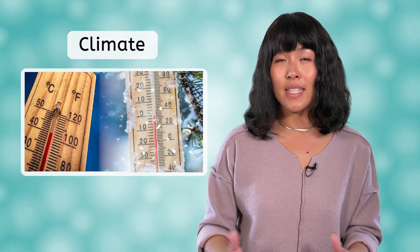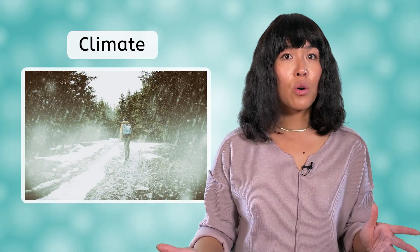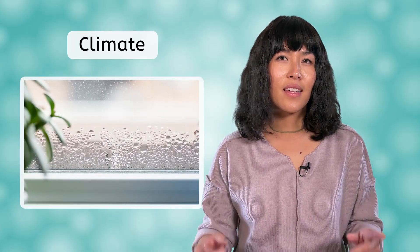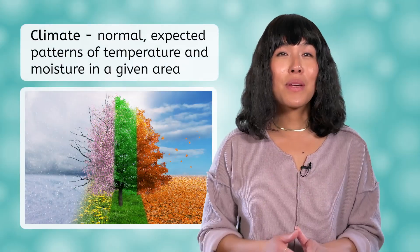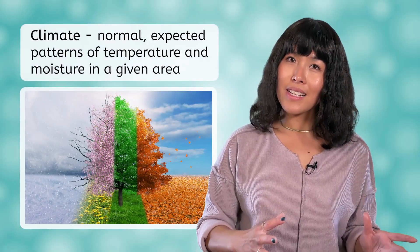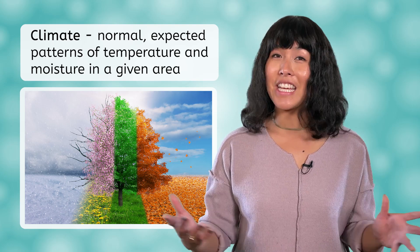Before we jump into these different biomes, let's learn about an abiotic factor that has a decisive role in determining which organisms can survive in a biome: climate. What's the climate like where you live? Does it tend to be hot or cold for most of the year? Maybe you get a really hot summer but really cold winters. What about precipitation? Does it rain a lot or snow? Does the air often feel humid or is it very dry? These are all questions about climate. Climate is the normal or expected patterns of temperature and moisture in a given area.